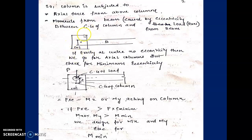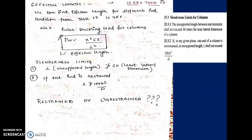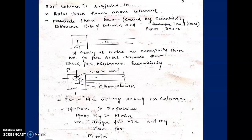Like in this figure, this is the column on which the beam is resting. If it is resting at the exact center, then the CG of the axial force coincides with the CG of the column. In that case no eccentricity is generated and no extra moment is generated. If it is exactly at the center with no eccentricity we go for axially loaded columns, but we have to check for minimum eccentricity because purely axial loaded columns are not technically possible — minimum eccentricity arises due to construction errors.